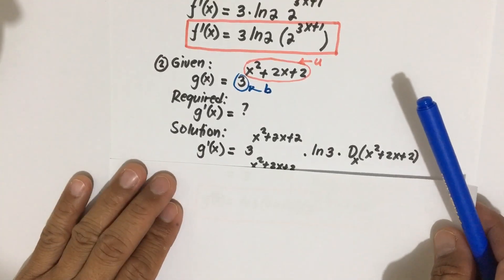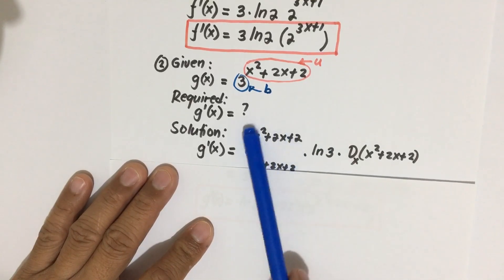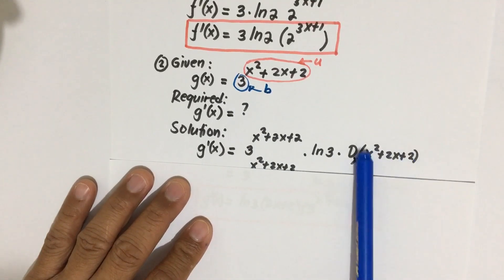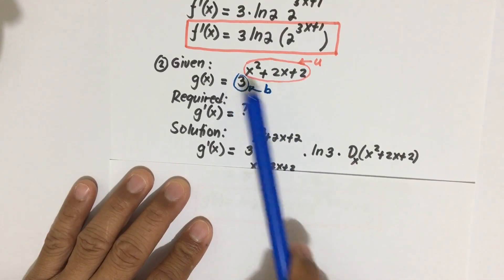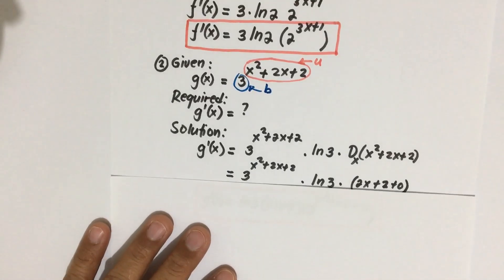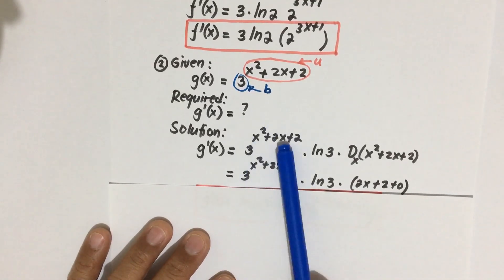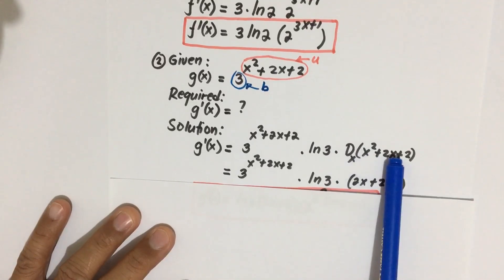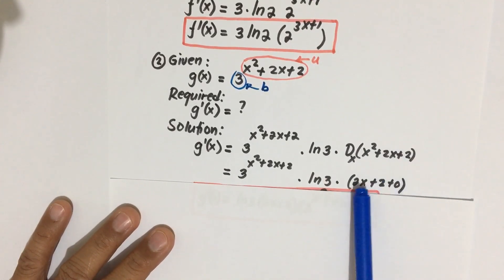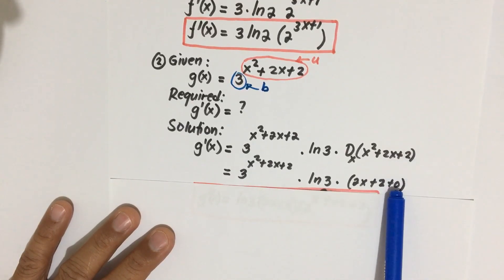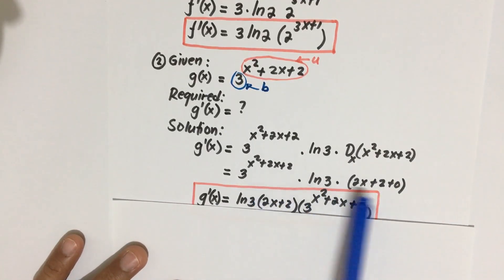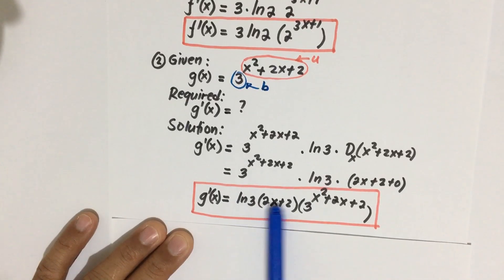Using this formula, we have b to the u — our b is 3 — then times ln b, which is ln 3, then the derivative of u, where u is the exponent x squared plus 2x plus 2. Applying the sum rule and power rule: derivative of x squared is 2x, derivative of 2x is 2, and derivative of 2 is 0. So we have 2x plus 2. We rearrange — constant first, then ln 3, then the exponential term — and that is the answer for the second example.